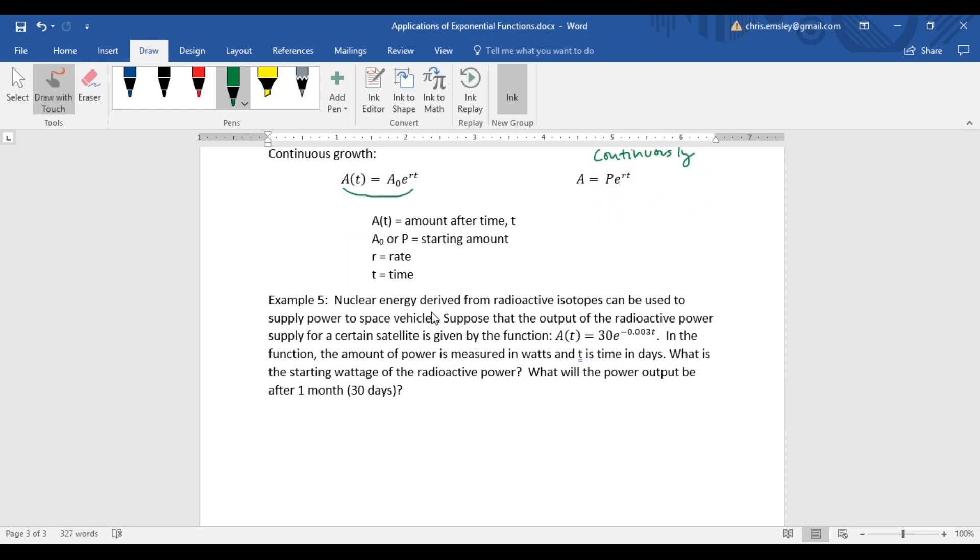Let's apply this to an example. Nuclear energy derived from radioactive isotopes can be used to supply power to space vehicles. Suppose that the output of the radioactive power supply for a certain satellite is given by this function: A of t. In the function, the amount of power is measured in watts, and t is time in days. What is the starting wattage of the radioactive power?